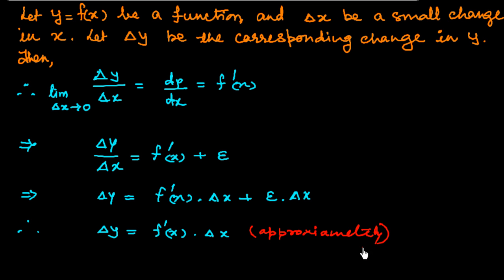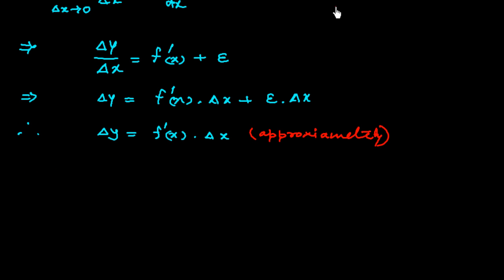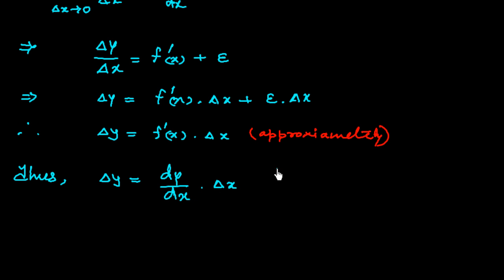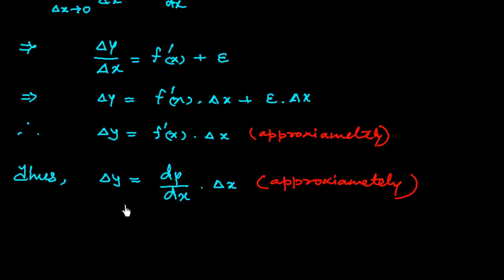We can substitute f'(x) with dy/dx, so the formula can be written as: δy ≈ (dy/dx)·δx. This formula is very useful in the calculation of small changes or errors in the dependent variable corresponding to small changes or errors in the independent variable.